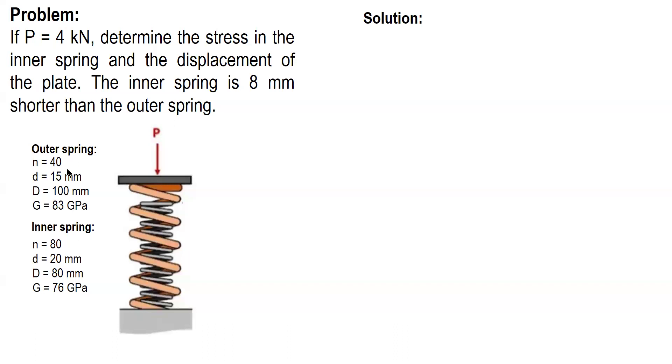And given the properties of the outer and inner spring: number of turns, diameter of the wire, mean diameter, as well as modulus of rigidity.